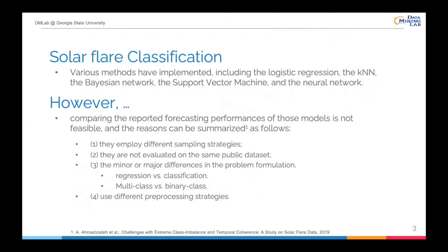Over the past two decades, researchers have implemented various methods to classify strong and weak solar flares, including the logistic regression, the KNN, the Bayesian network, the support vector machine, and the neural network, and they obtained huge success.